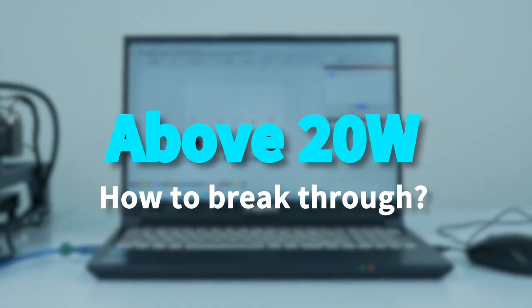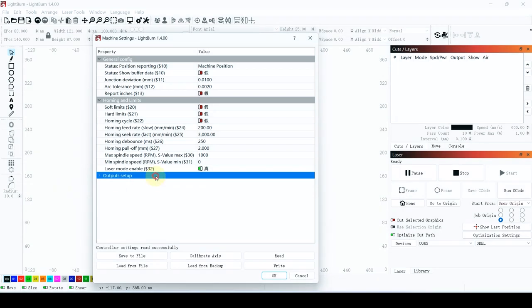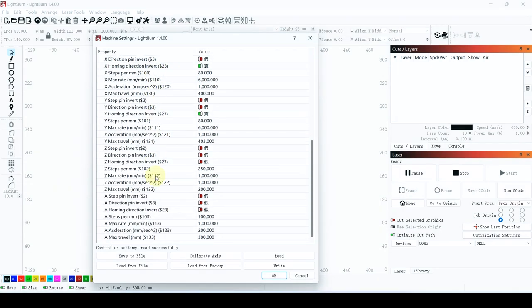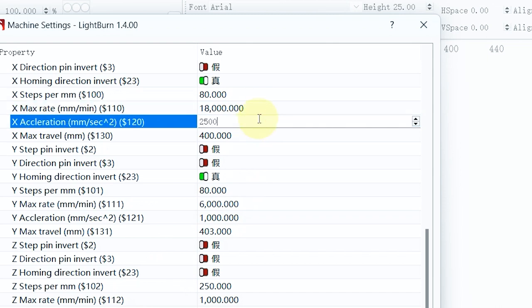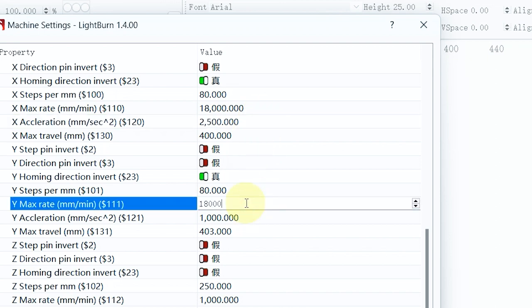20 watt and above. Lasers with a weight of 20 watts or higher are heavier, more susceptible to inertia, and have poor stability. It is not recommended to exceed higher speeds, and it is recommended not to exceed 18,000 millimeters per minute.